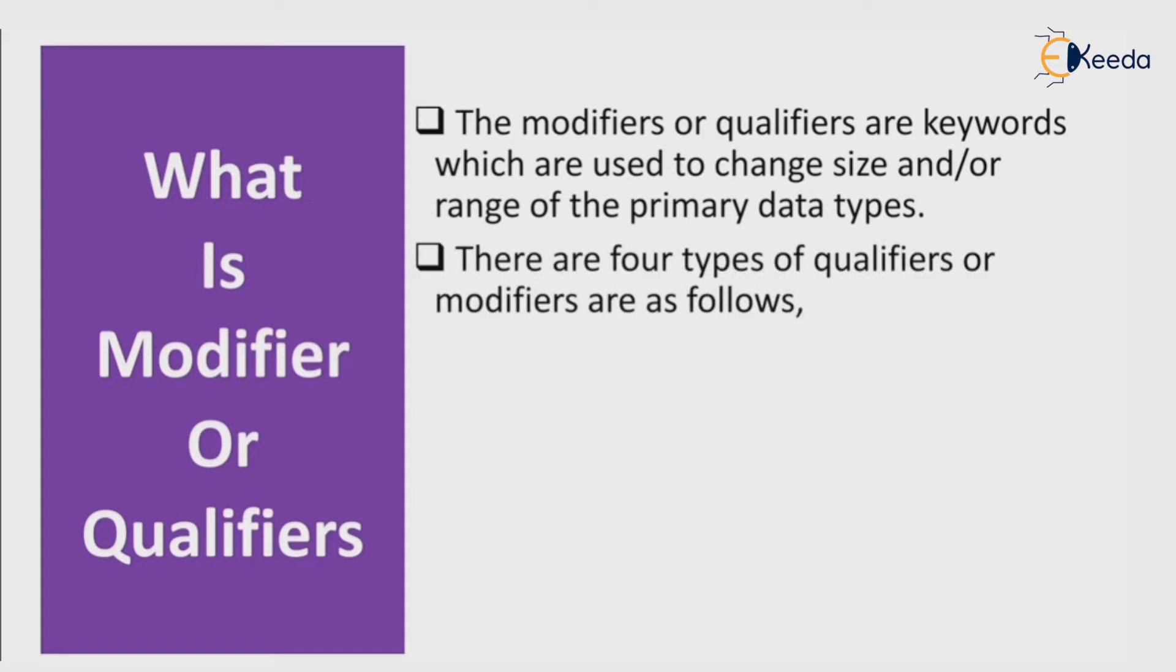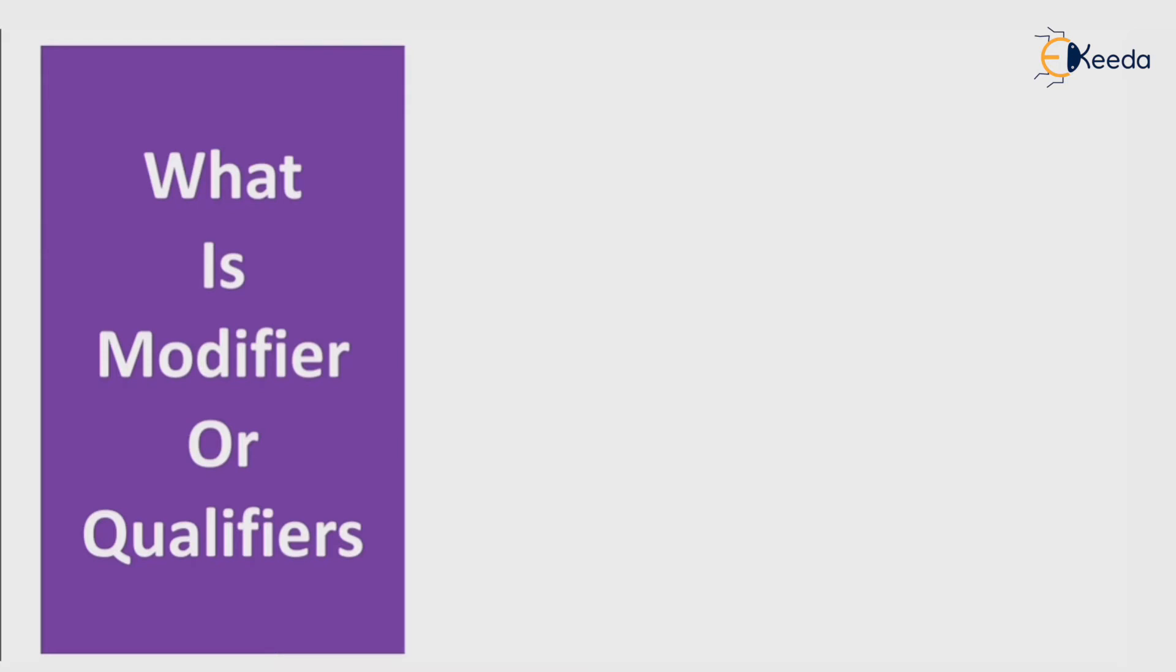There are four types of qualifiers or modifiers as follows: first is size, second is sign, third is const, and fourth is volatile. Let's see one by one.